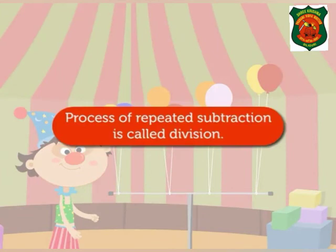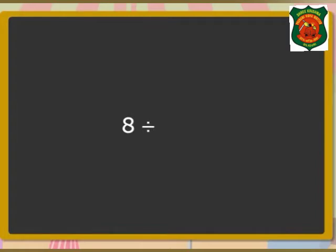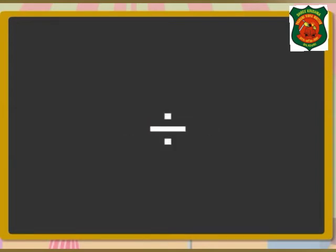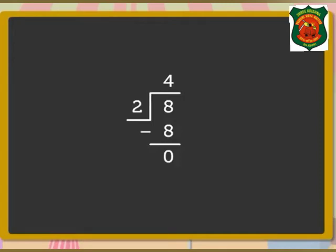My dear students, now see. We write it as eight, then the symbol of division, then two. Now put the equal to sign, and then the number four. We read it as eight divided by two is four. This symbol is used to show division. Look at this solved example on division.